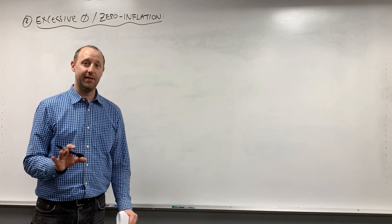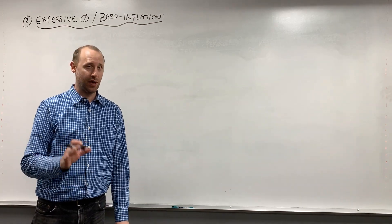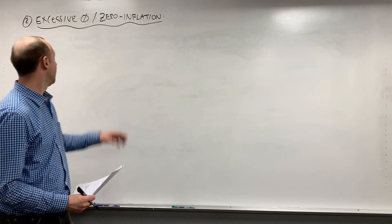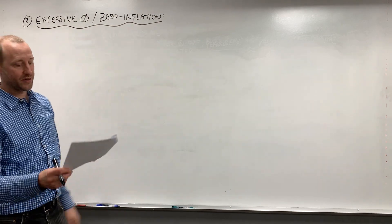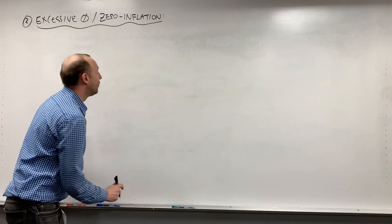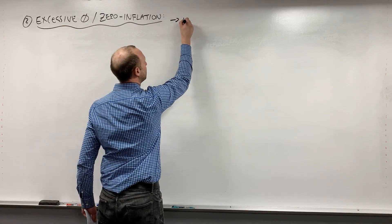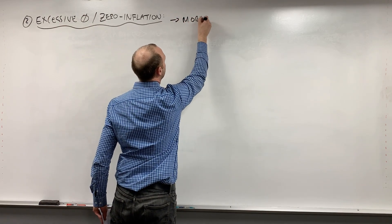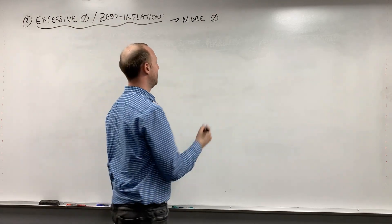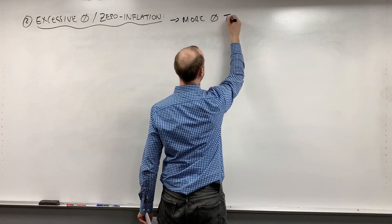We're going to talk a little bit about the second very common problem in Poisson regression, and that's excessive zeros or zero inflation. Essentially what this is, is when there are more zeros, or more non-events, no occurrences of the event, than expected.